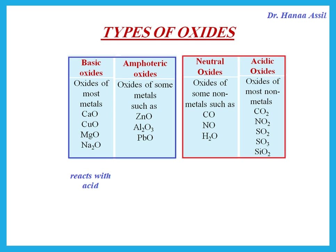Remember that if something is basic, it reacts with acid. If something is acidic, it reacts with base. Amphoteric means it reacts with both acids and bases. Neutral means it doesn't react with either — it doesn't react with acid and it doesn't react with base.